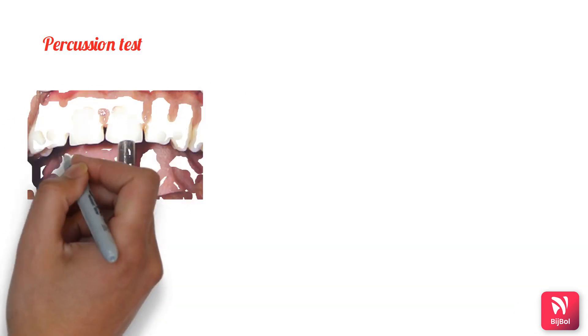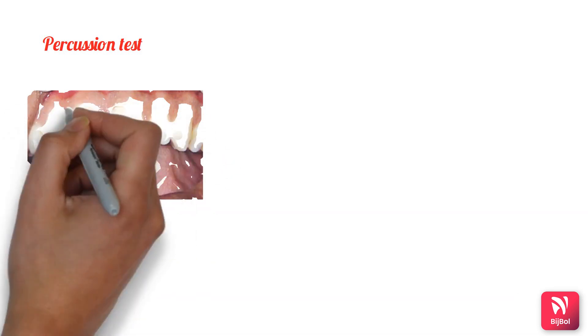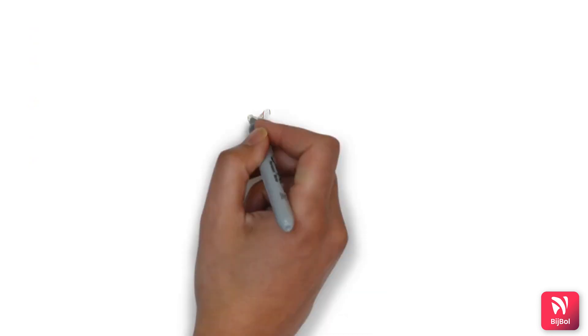The periodontal status of the tooth should be checked to see if it responds to percussion normally or is tender to percussion. When evaluating the periodontal ligament, mobility should also be checked in all directions.